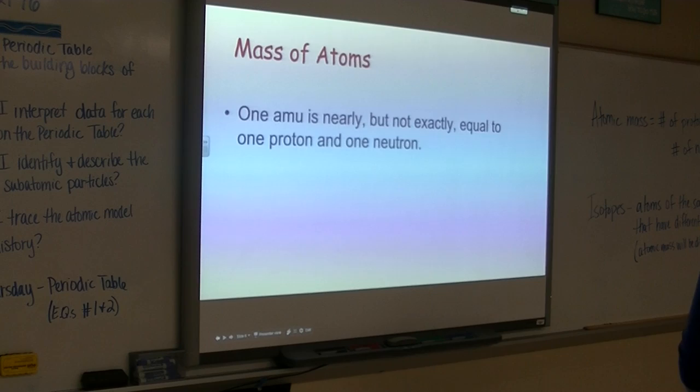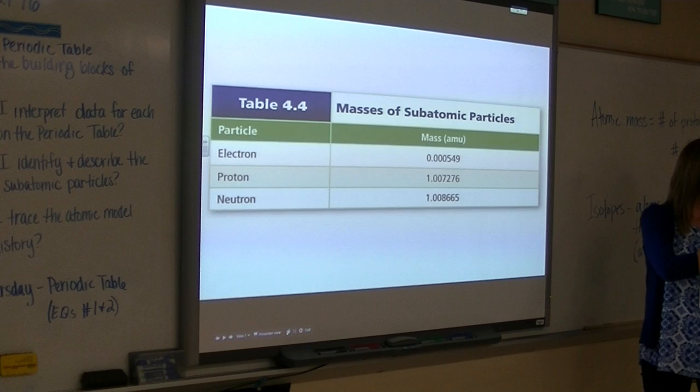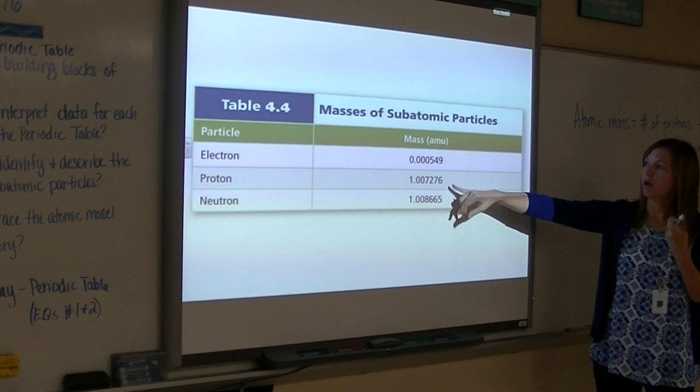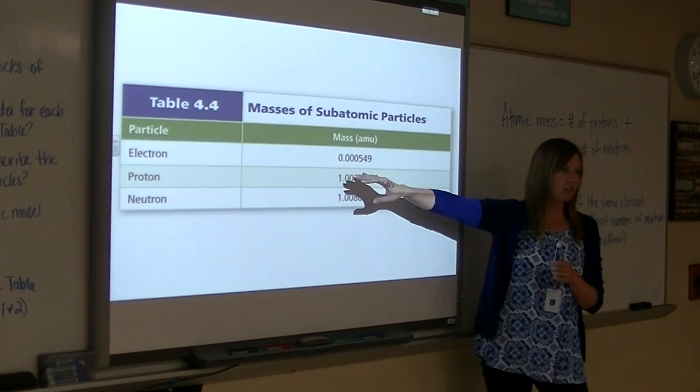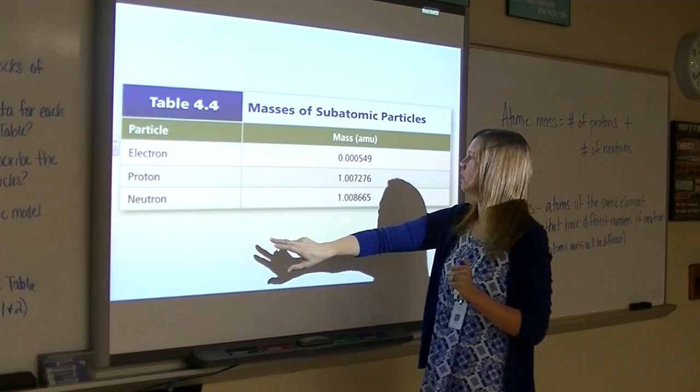So this next slide is going to show you what I just said, or what was on the last slide. Each of these are the masses in atomic mass units. So a proton and a neutron are about one, and an electron is 0.0005. So see how much smaller the electron is? Significantly smaller, right, than the other two. You don't have to copy down these numbers.